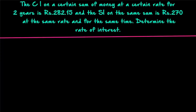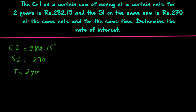Welcome to today's class. The question is: the compound interest on a certain sum of money at a certain rate for two years is rupees 282.15, and the simple interest on the same sum is rupees 270 at the same rate and for the same time. The compound interest is 282.15 rupees, simple interest is 270, and time is equal to 2 years. We have to find out the rate of interest.